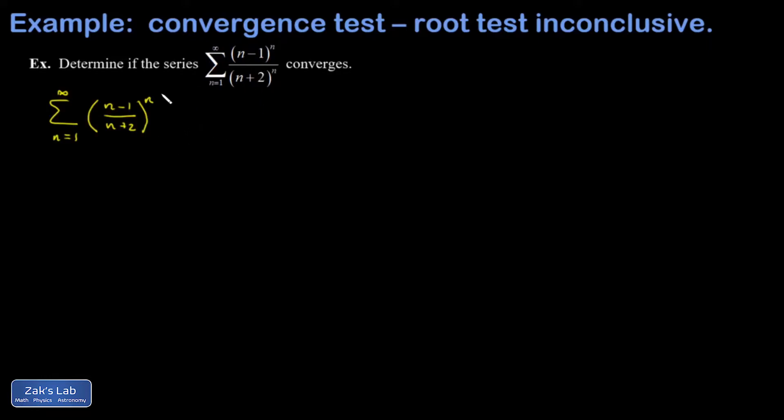Why not use the root test so we can undo the nth power? In the root test, we're investigating the limit as n goes to infinity of the nth root of the nth term. If this comes out to a number less than 1, we get absolute convergence. If it's greater than 1, we get divergence. And if it's equal to 1, it's inconclusive.